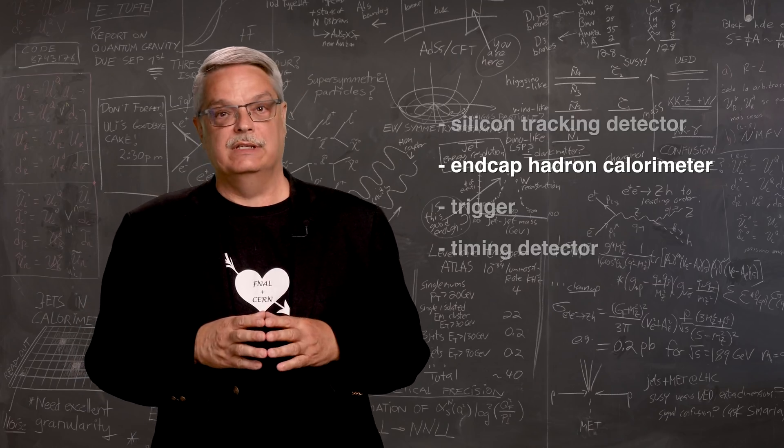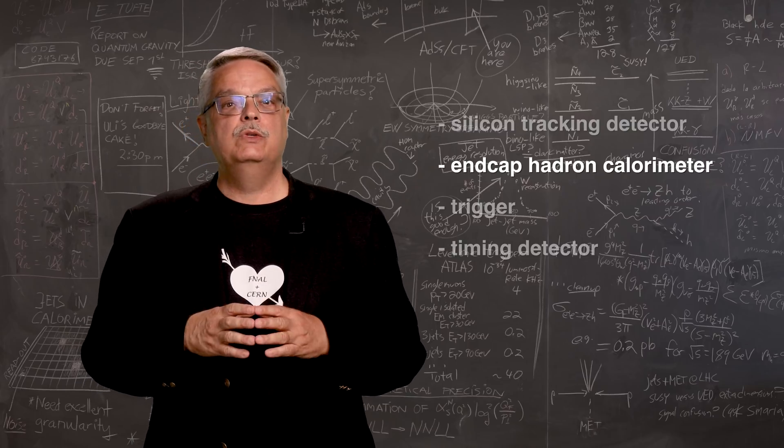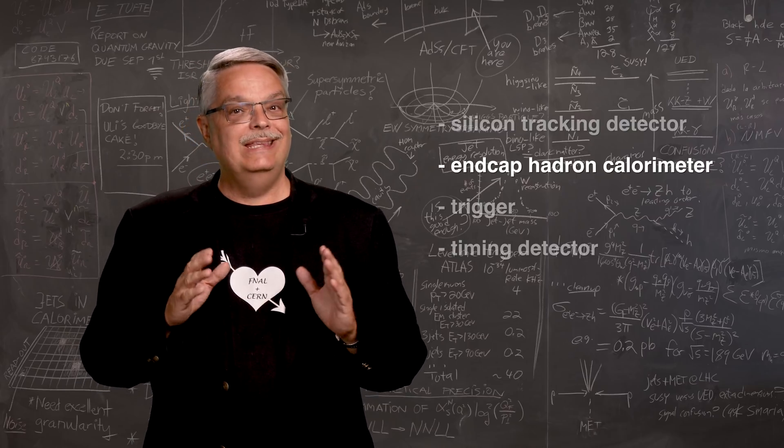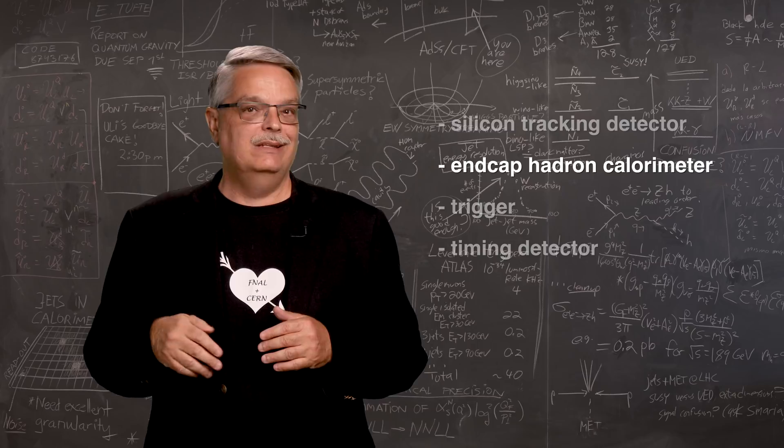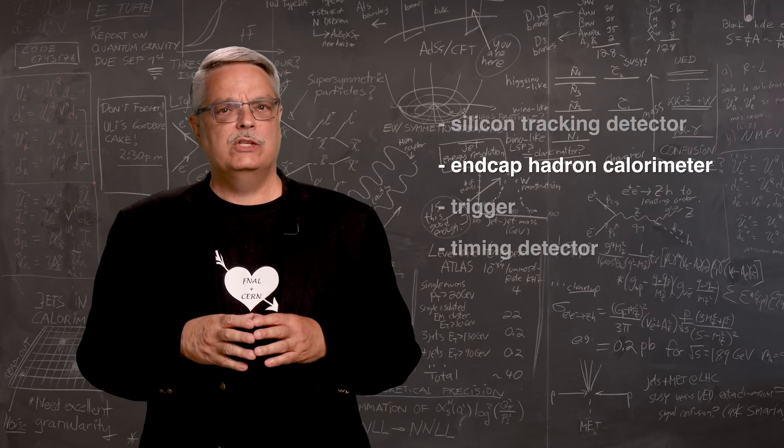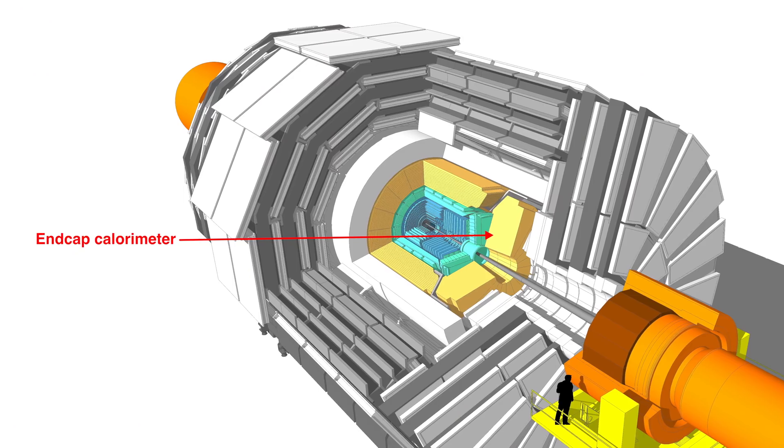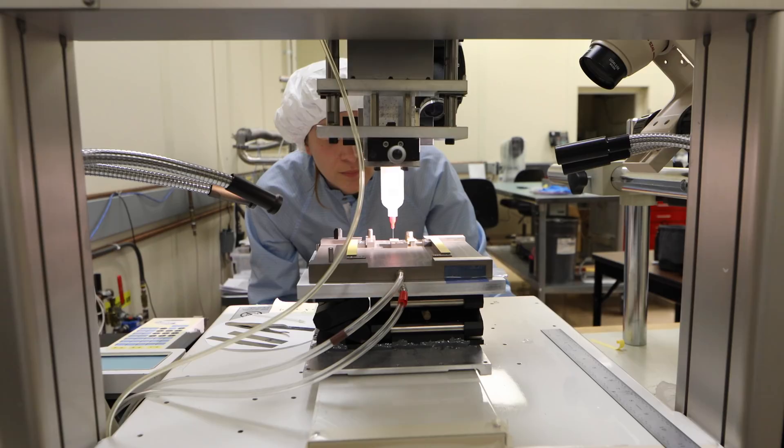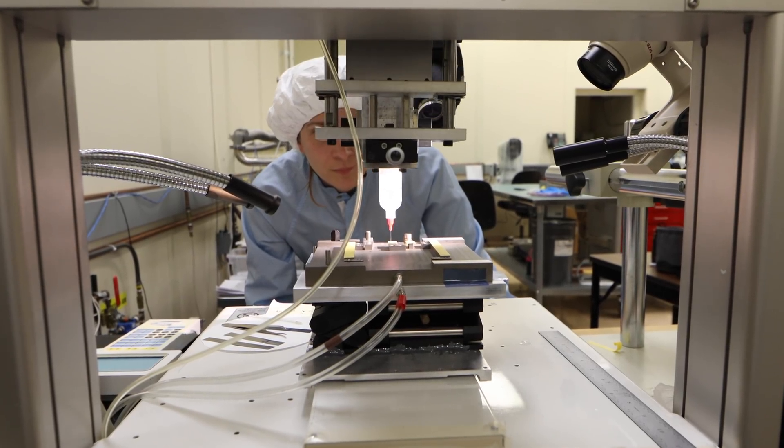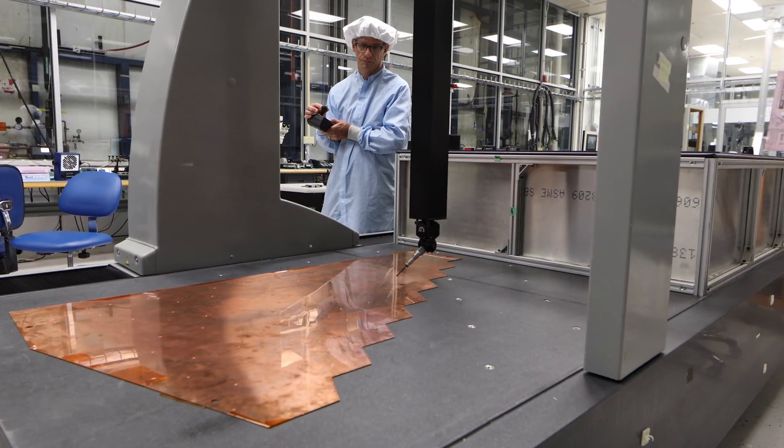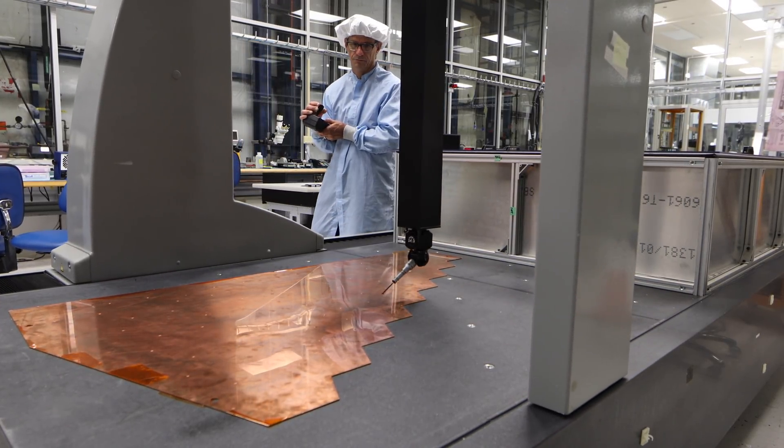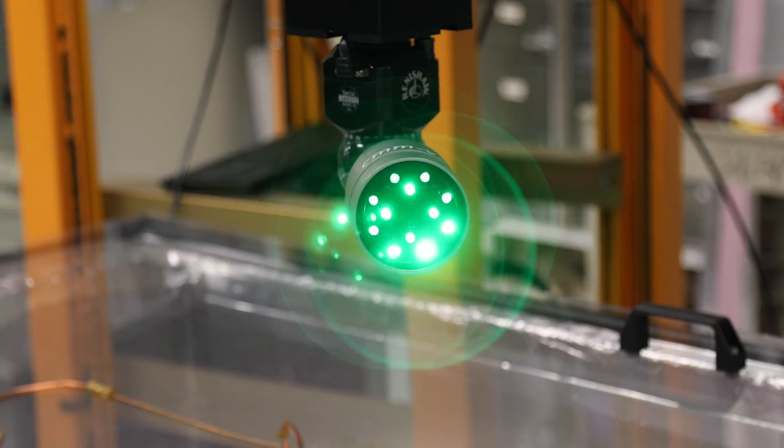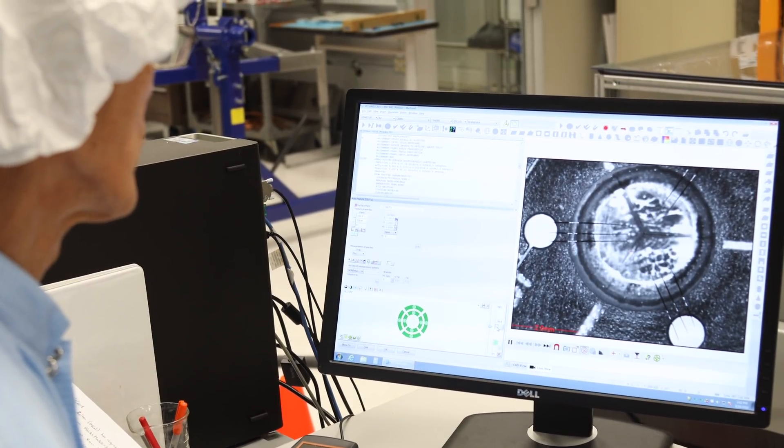Then there's the forward hadron calorimeter. Calorimeters measure the energy that hits them, and the energy environment near the beam line is especially intense. That's what we call the forward direction. CMS is removing the existing forward calorimeter and replacing it with one that uses silicon detector technology in places where the radiation environment is high, and another technology called plastic scintillator in regions where the radiation is lower.